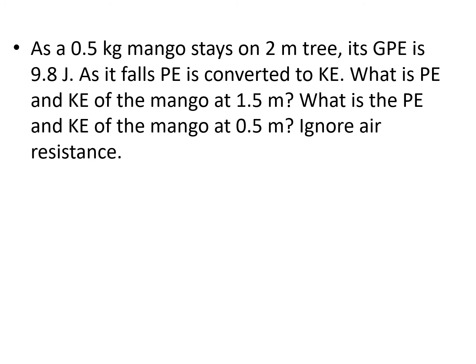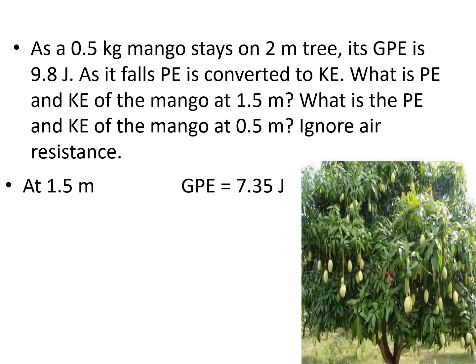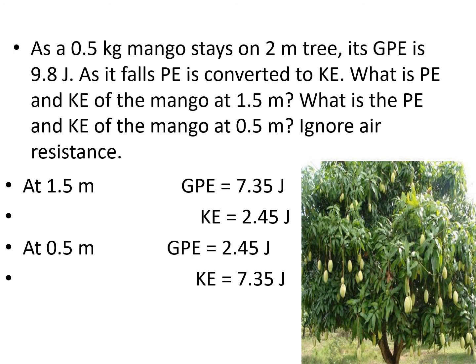What if the 0.5 kilogram mango coming from the 2 meter tree falls? What is the PE and KE at 1.5 meter and at 0.5 meter? So, at 1.5 meter, the GPE is 7.35 joules, while the KE is 2.45 joules. If you will combine, the sum is still 9.8, proving that the mechanical energy is conserved. At 0.5 meter, you will still have 9.8 joules. So, at any position on the path of the mango as it falls to the ground, the total mechanical energy is the same. It is constant at 9.8 joules.